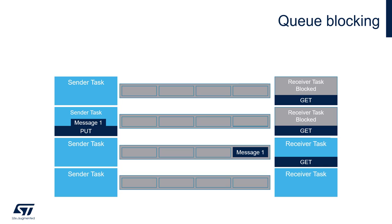In our case we are using timeouts to get requests, so in a third phase receiver tries again to read data from the queue, this time successfully, and it can continue its execution. In the fourth phase, there is no activity in the queue and both tasks operate in a ready state.